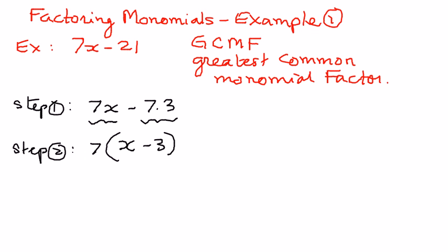So as you can see, 7 times x is 7x, 7 times negative 3 is negative 21. And therefore, we are on the right track.